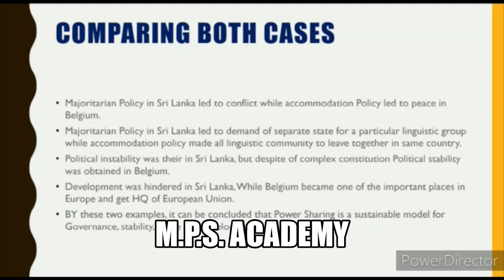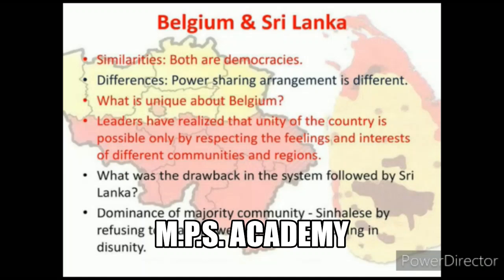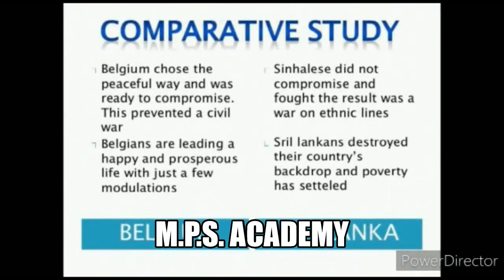From these two examples, we find that power sharing is a sustainable model for governance, stability, peace, and development. Comparing both countries: both are democracies — that is the similarity. The difference is that their power-sharing arrangements are different. What is unique about Belgium is that its leaders realized that the unity of the country is possible only by respecting the feelings and interests of different communities. The drawback in Sri Lanka was the dominance of the majority community, which refused to share power with Tamils, resulting in disunity.